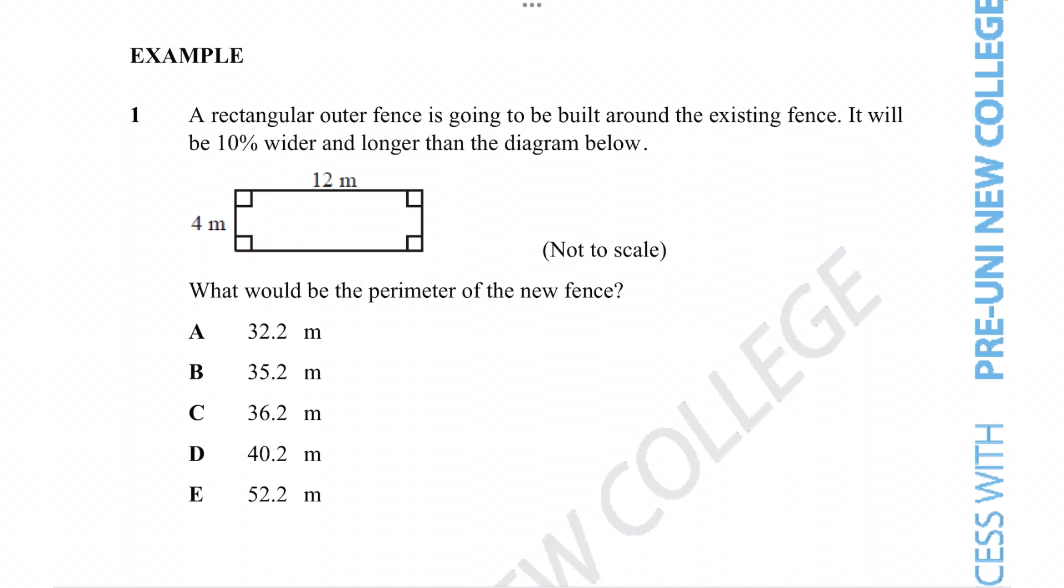For this example question, we're told that a rectangular outer fence is going to be built around an existing fence. It will be 10% wider and longer than the diagram below. It asks us to figure out the perimeter of the new fence.